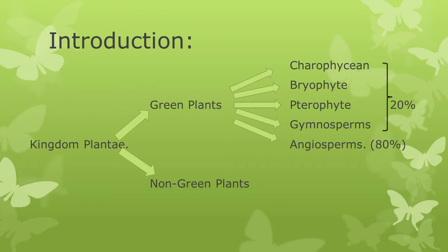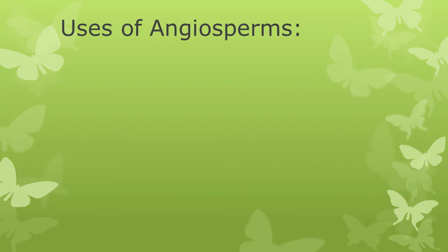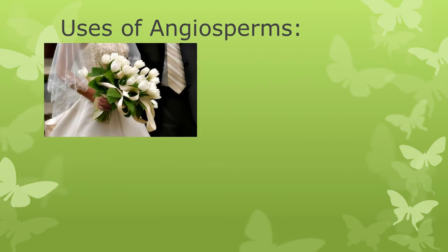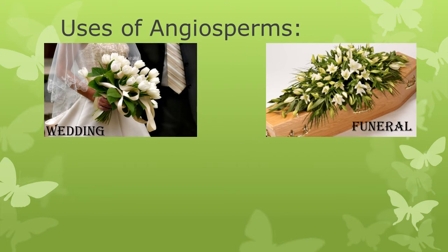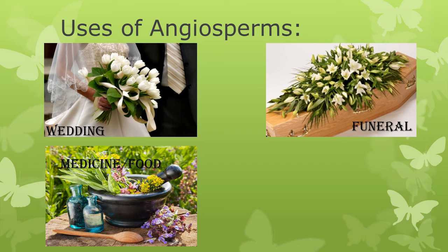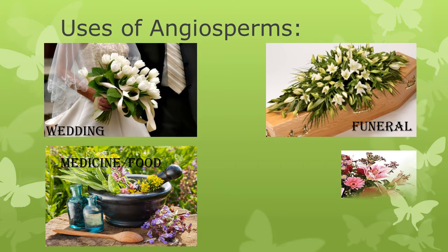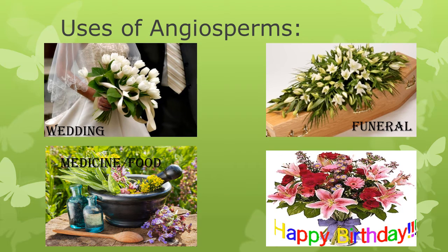About 80% of all green plants are Angiosperms, making them the most diverse group within Kingdom Plantae, with about 300,000 known species. They are very useful for many reasons — we use them for weddings, funerals, medicinal purposes, food, birthdays, and other social functions, to name a few.